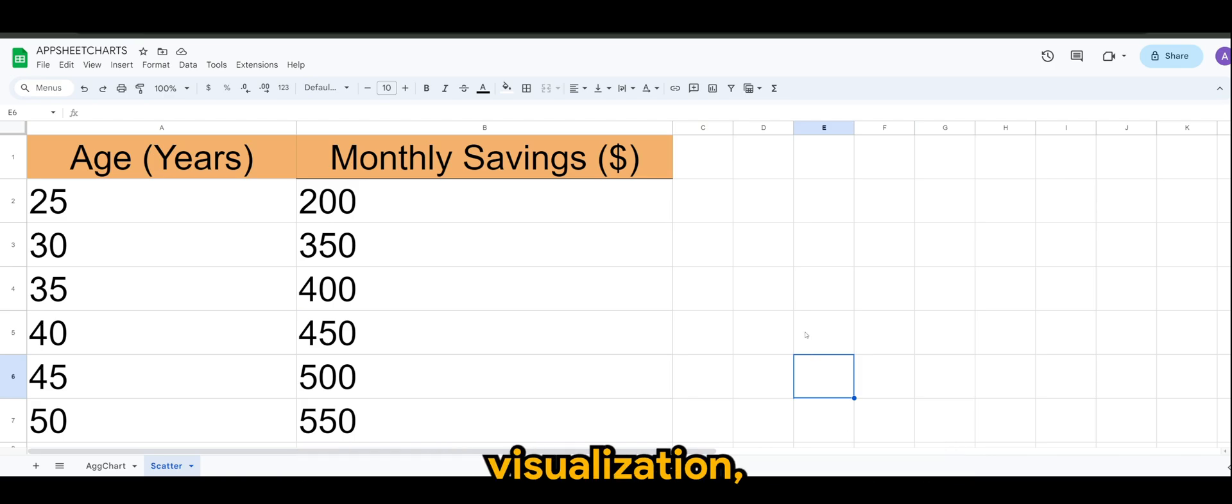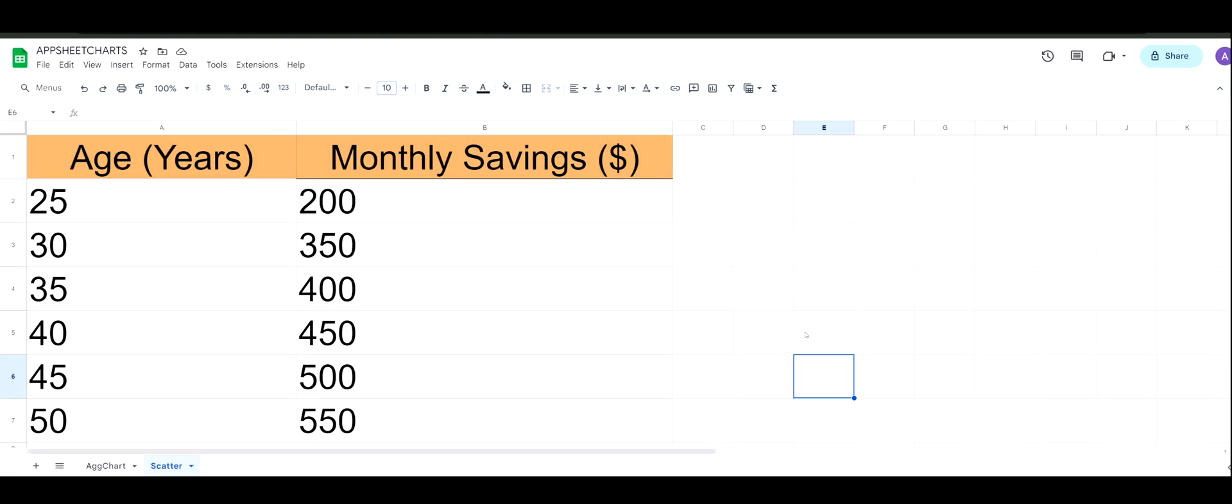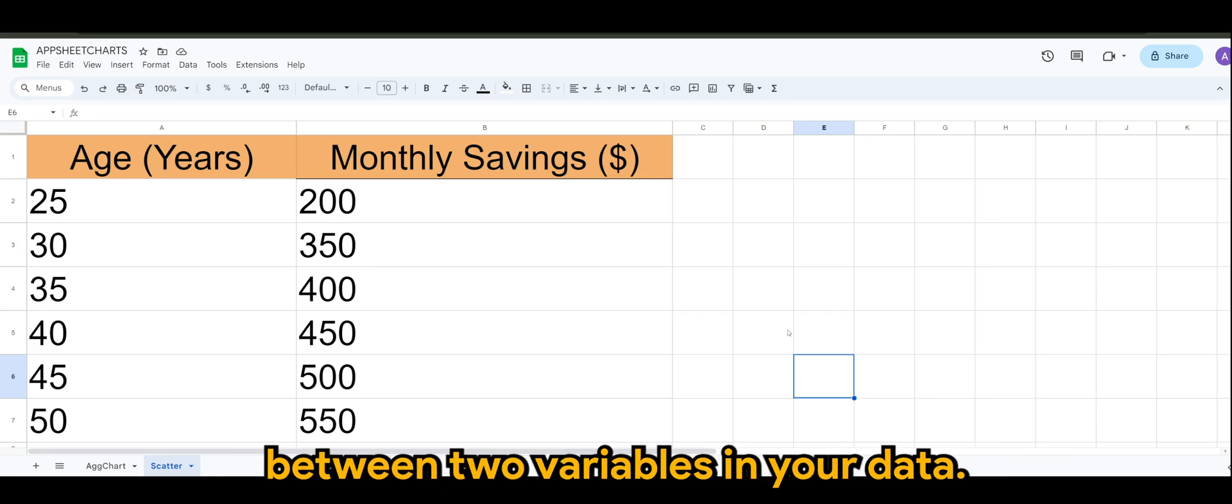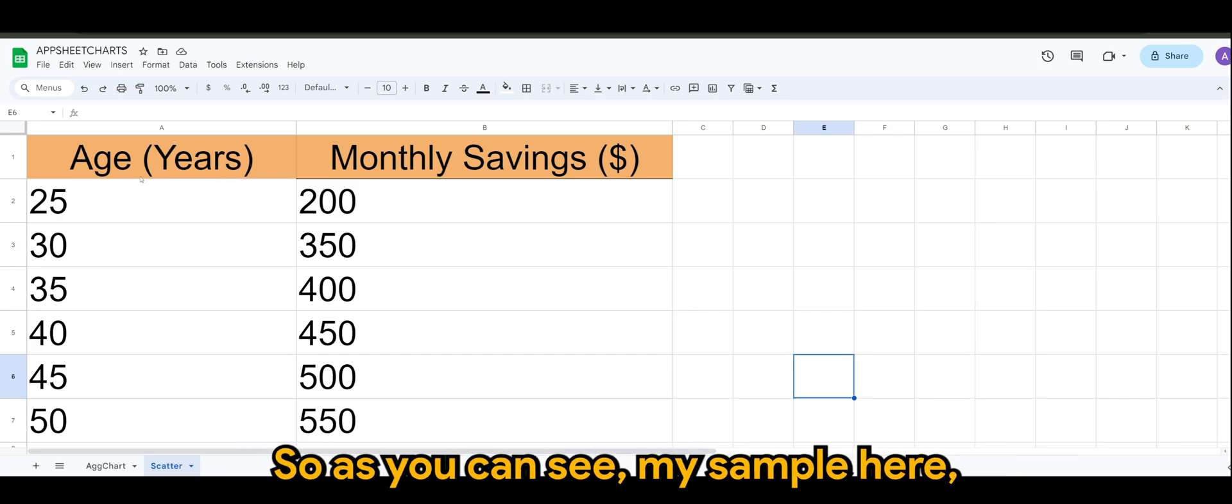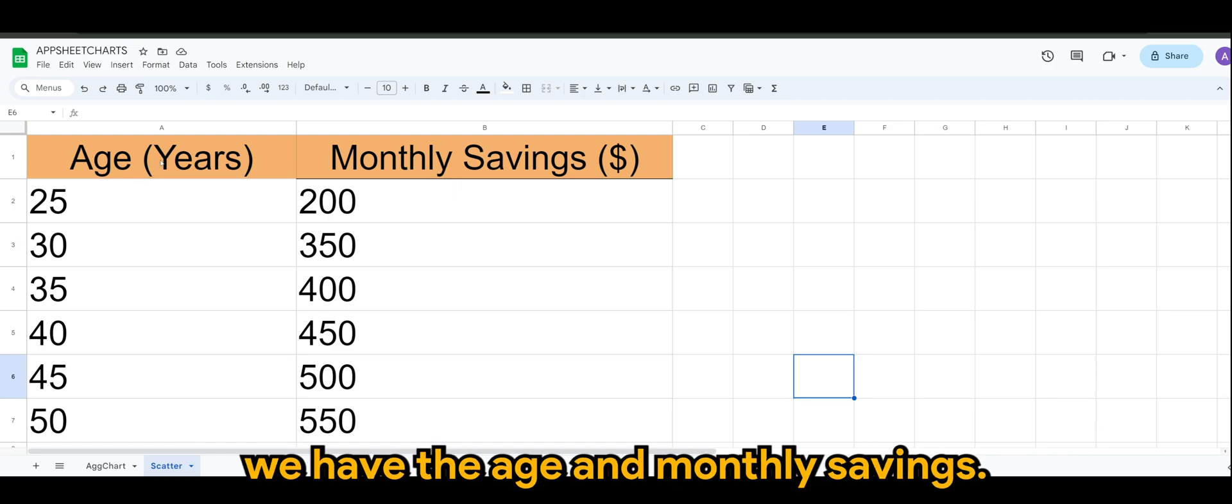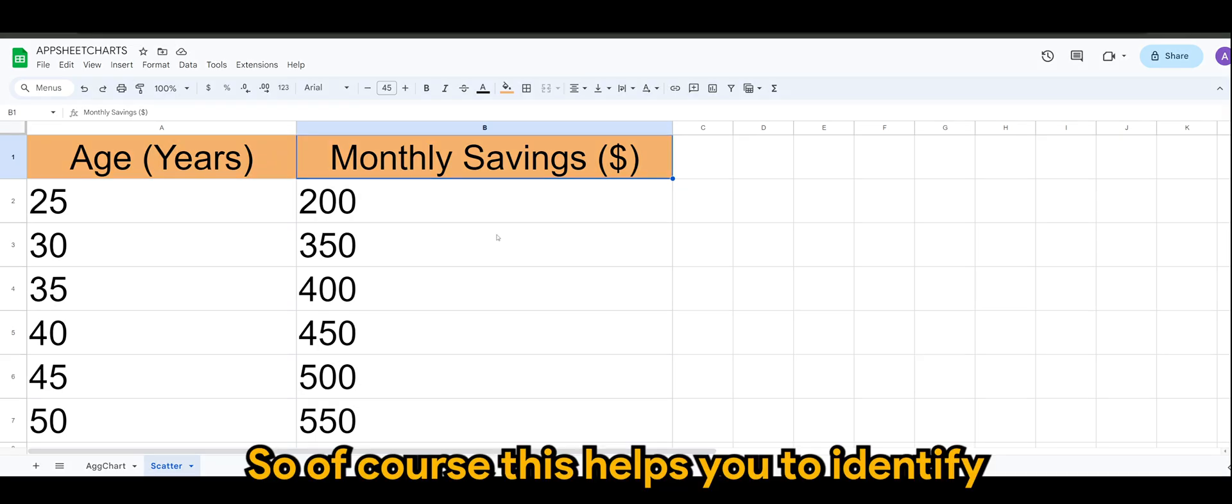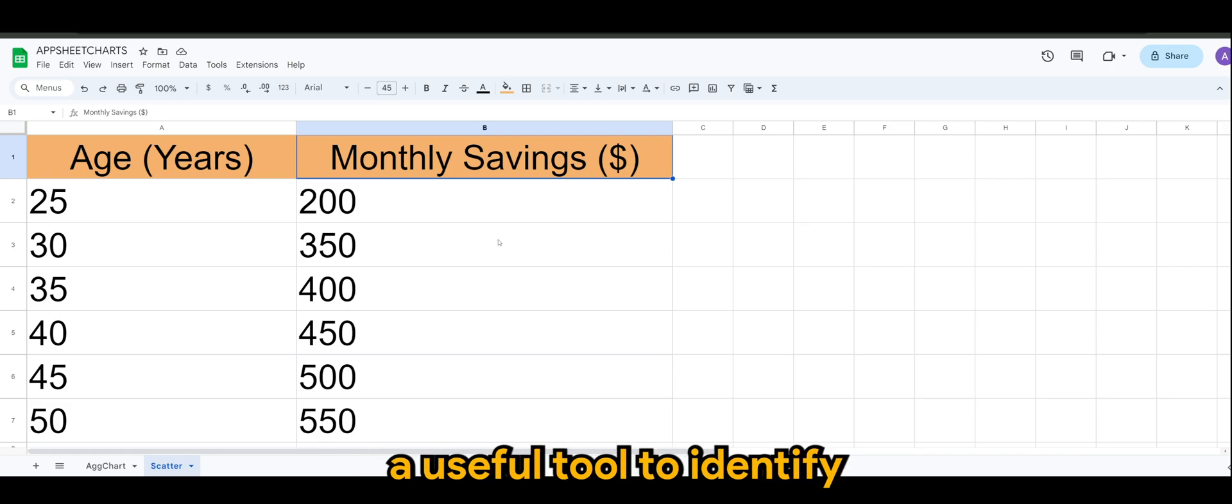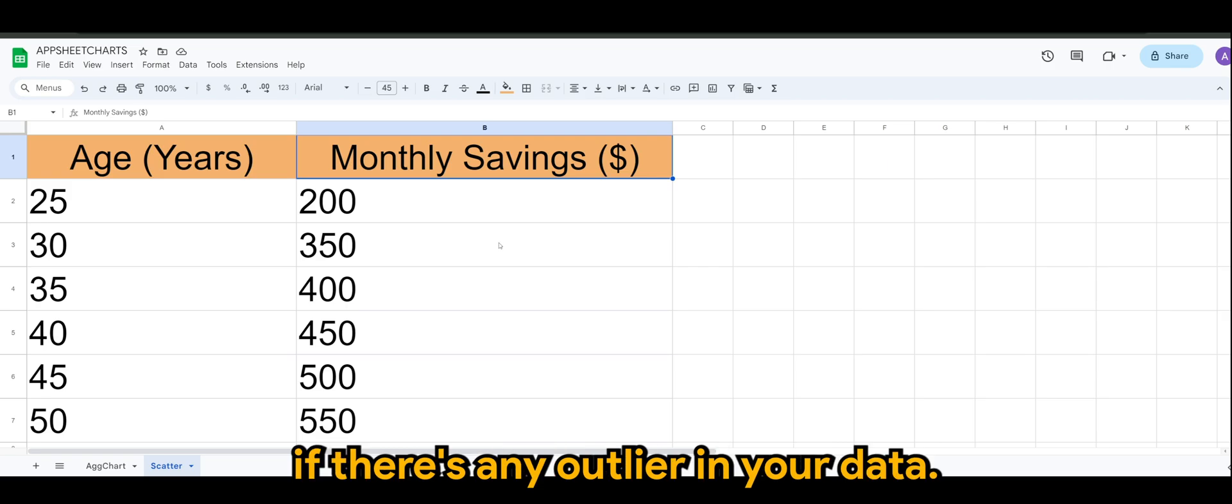Alright guys, so scatter plot is actually a useful visualization to identify the relationship between two variables in your data. As you can see my sample here, we have the age and monthly savings. This helps you identify the relationship and trend, and it's actually a useful tool to identify if there's any outlier in your data.